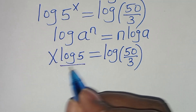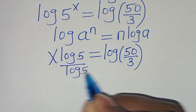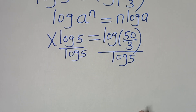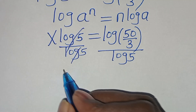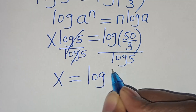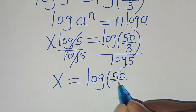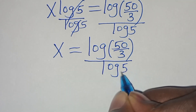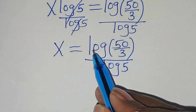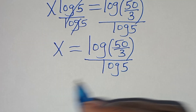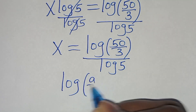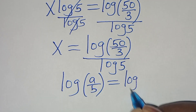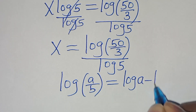Let's divide both sides by log 5, so that x is equal to log(50/3) divided by log 5. Now you find that log(50/3) is in the form of log(a over b), and this can be expressed as log a minus log b.